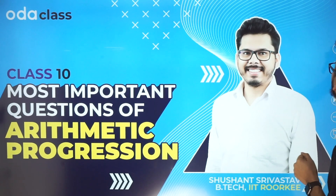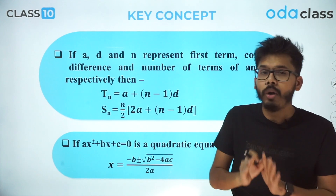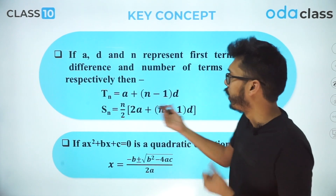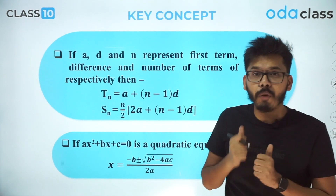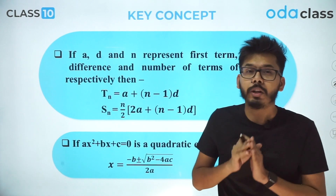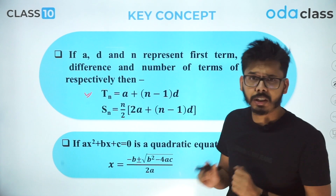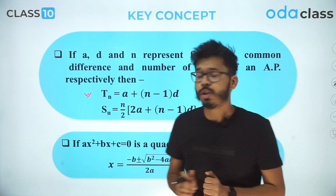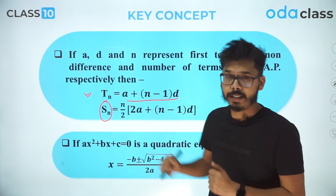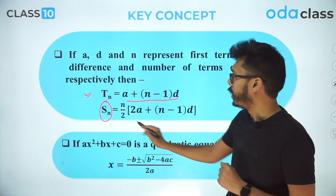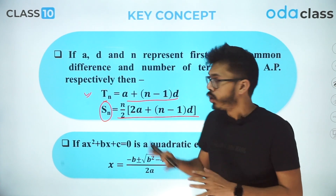Before the first question, I'm going to recall a few key concepts of arithmetic progression. If a, d, and n represent the first term, common difference, and number of terms of an AP, then the nth term — also written as Tn — is given as a + (n−1)d. Similarly, the sum of n terms, written as Sn, is given as n/2 × [2a + (n−1)d].